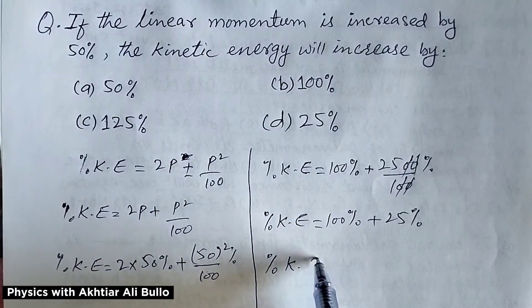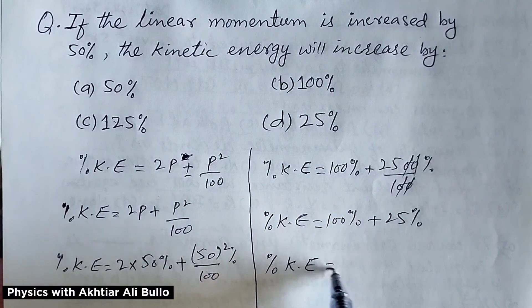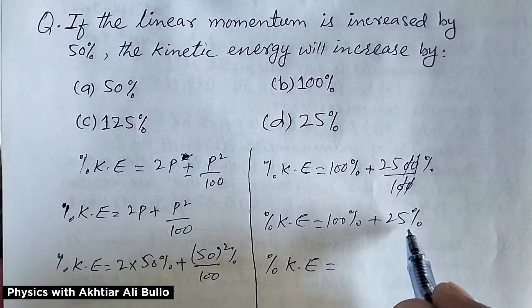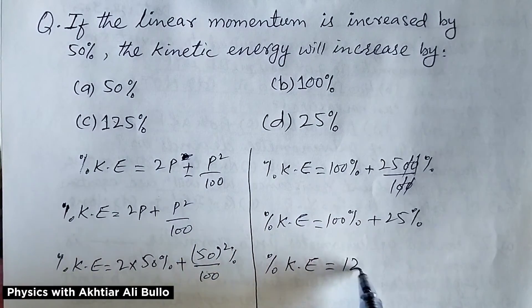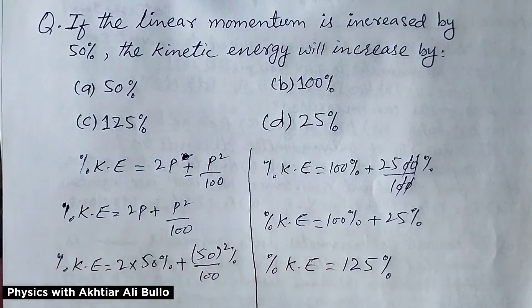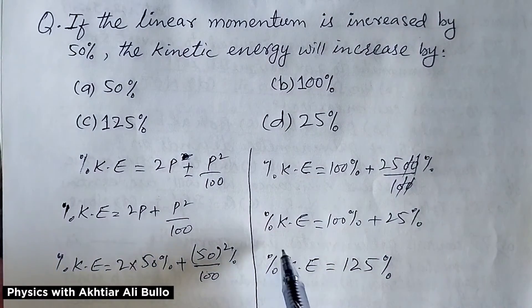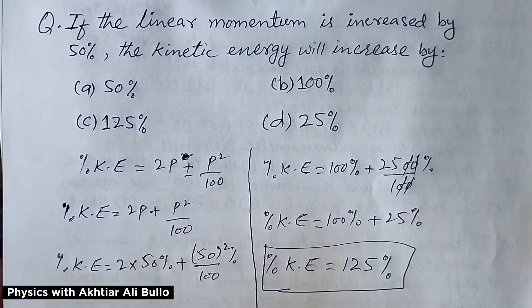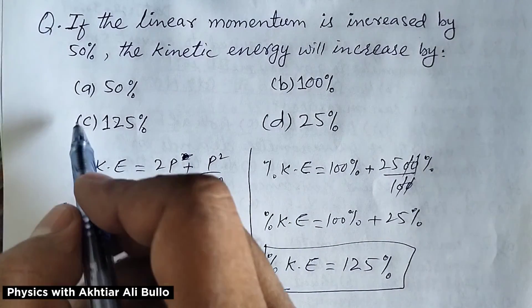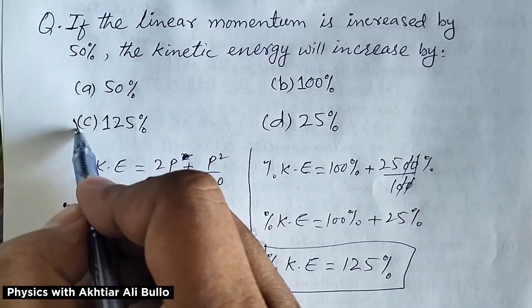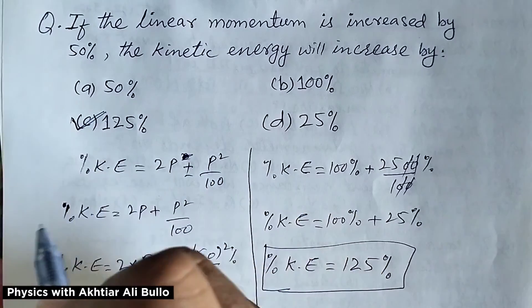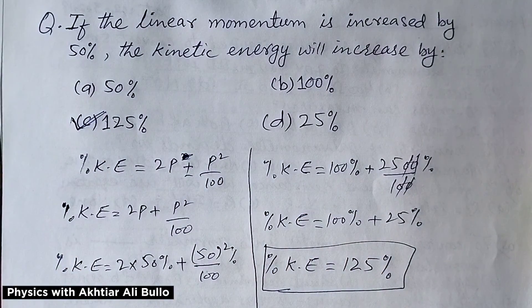Percentage increase in kinetic energy = 100% + 25% = 125%. So, the correct option is C, 125%.